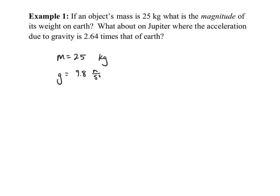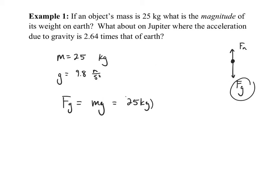Since we're looking for the magnitude of the weight, we don't care about the direction — we know the direction is down. The weight vector points downward, and the normal force from the surface acts upward. To find the weight, Fg equals mg, which is 25 kilograms times 9.8 meters per second squared. Our answer is 245 newtons on Earth.